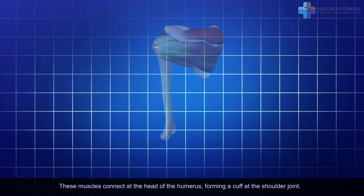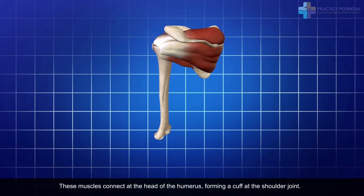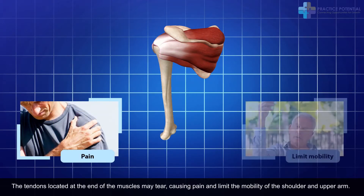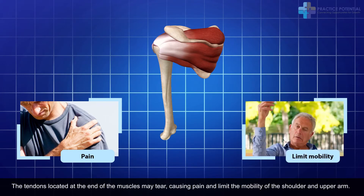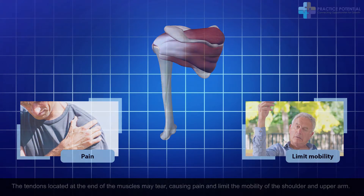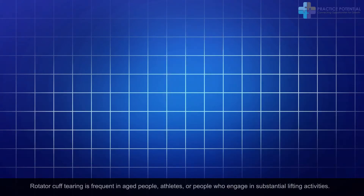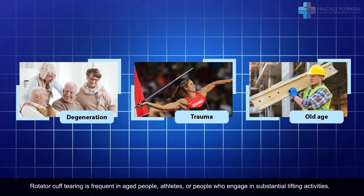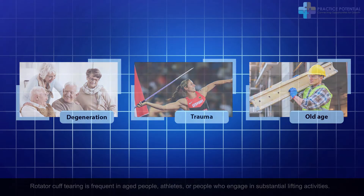These muscles connect at the head of the humerus, forming a cuff at the shoulder joint. The tendons located at the end of the muscles may tear, causing pain and limiting the mobility of the shoulder and upper arm. Rotator cuff tearing is frequent in aged people, athletes, or people who engage in substantial lifting activities.